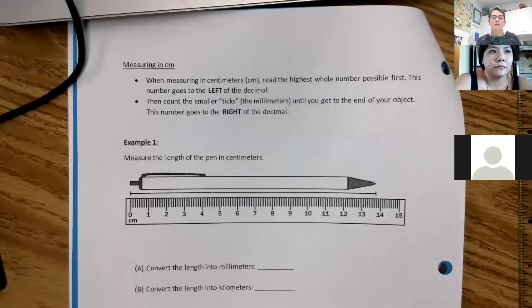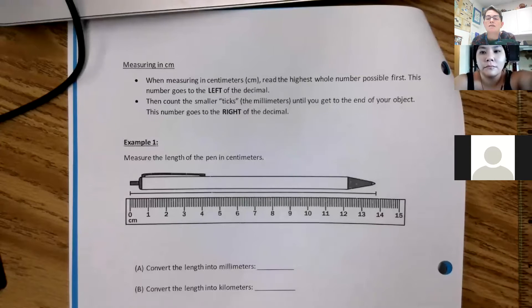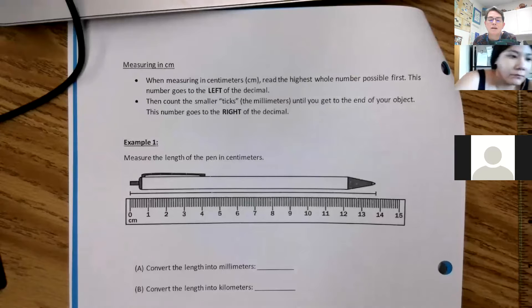Alright, so we are recording now. We're going to measure in centimeters. When measuring in centimeters, read the highest whole number possible first. This goes to the left of the decimal. Count the number of small ticks, which is millimeters, until you get to the end of your object. That goes to the right of the decimal.